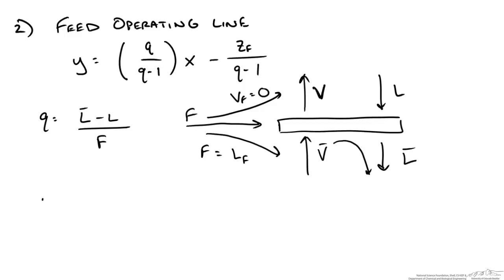To determine this quantity we need to write a balance. We know L-bar equals L plus our feed F, plus for every 6 moles of our feed we condense 1 mole of vapor, so it's also going to add 1/6 of our feed. Using this information, Q equals F plus 1/6 F over F, and we get a quality of 7/6.